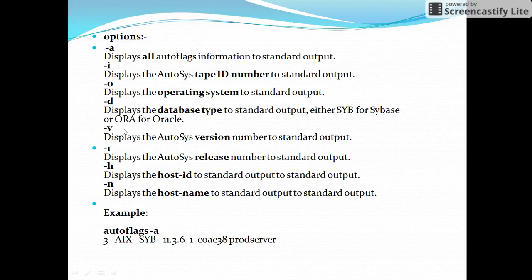With option -v, we will get the version on which the current autosys is running. In the example, it is running with the latest version of autosys, that is 11.3.6. The next option is -r, which gives the release number. In the example, the release number is 1.